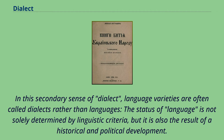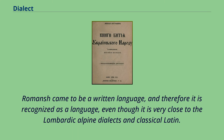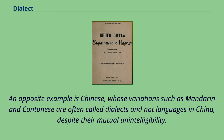In this secondary sense of dialect, language varieties are often called dialects rather than languages. The status of language is not solely determined by linguistic criteria, but is also the result of historical and political development. Romance came to be a written language and is therefore recognized as a language, even though it is very close to the Lombardic Alpine dialects and classical Latin.